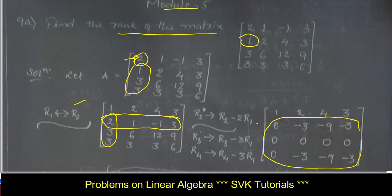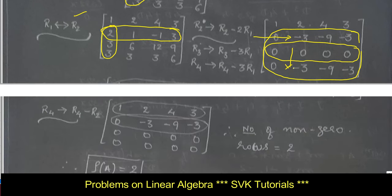The next step is to consider the leading entry of the second row — the second element will be the leading entry. Make the entries below as 0. You can observe that all the rows are 0 here; you can interchange R3 with R4 and then apply the operation. Directly applying the R4 operation: R4 changes to R4 minus 2 times R2. Since we have the same value with the same sign, subtracting gives 0, making all elements of the fourth row 0.